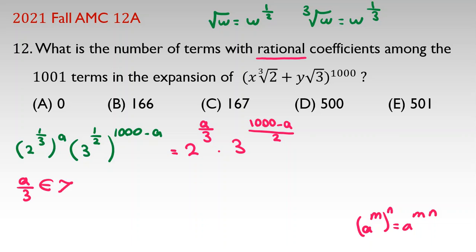So, a over 3 should be integers. And, 1000 minus a, all over 2 should be integers. From first one, a over 3 is integer, means a is multiple of 3. A has to be a multiple of 3.